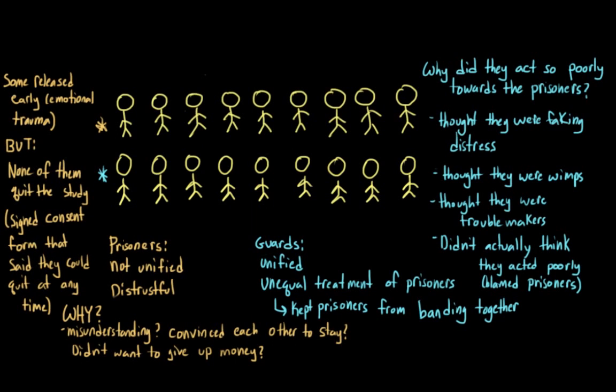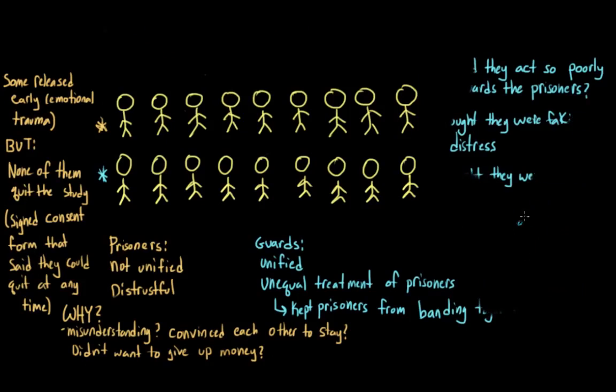And you might be wondering if there was any kind of personality trait that might explain why people behaved the way that they did in this study. And Zimbardo wondered that too. And it turned out that there wasn't. As far as any of the measures that they used could tell, there was no one easy to define factor that caused people to act like they did.